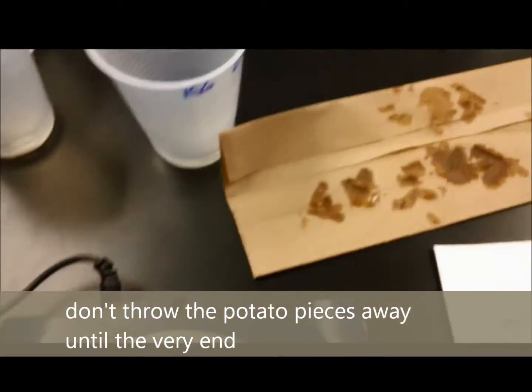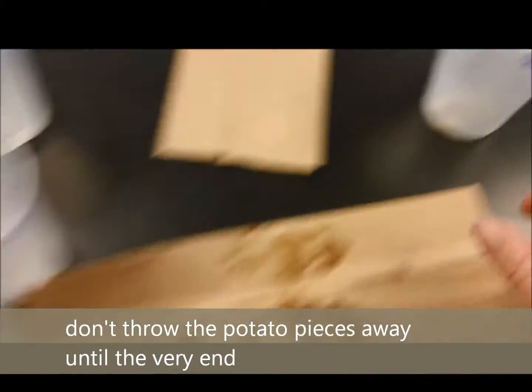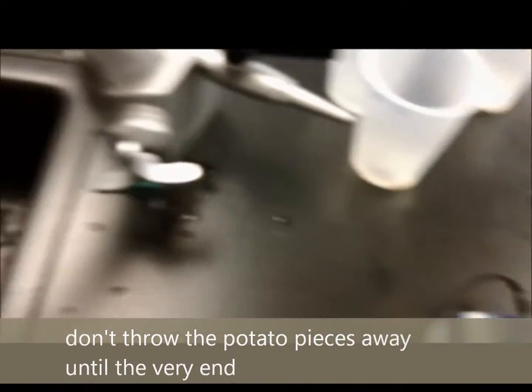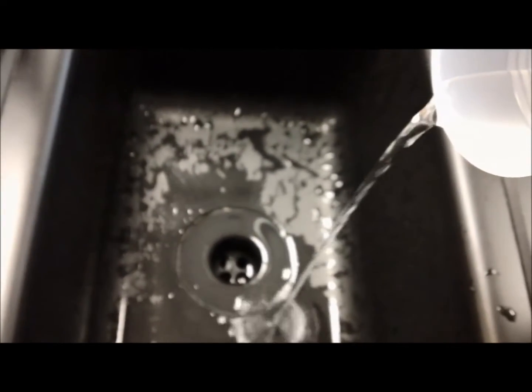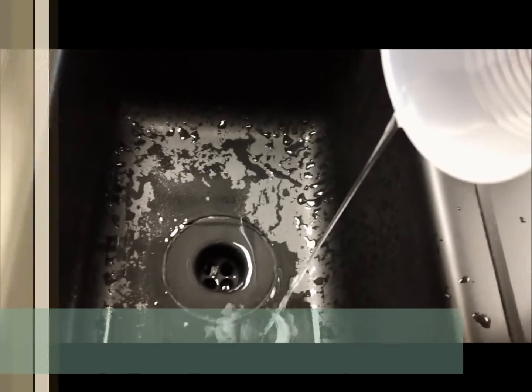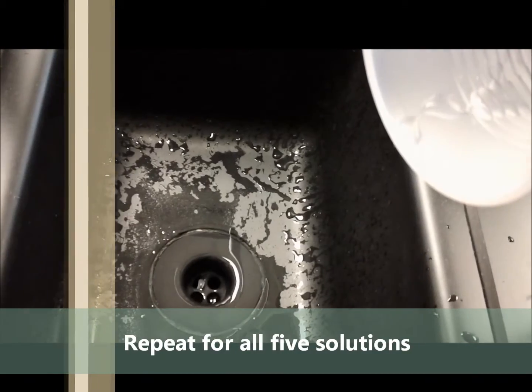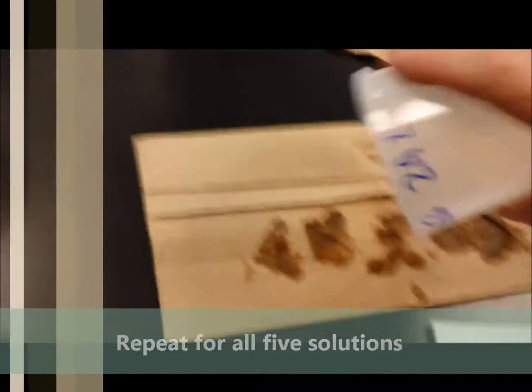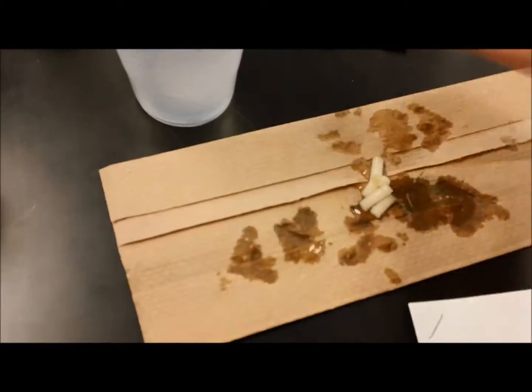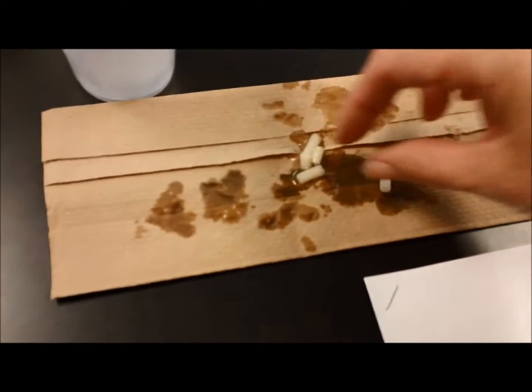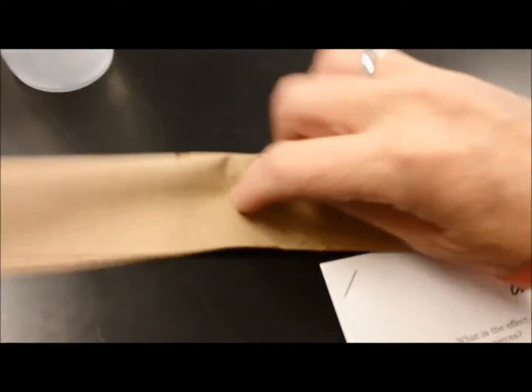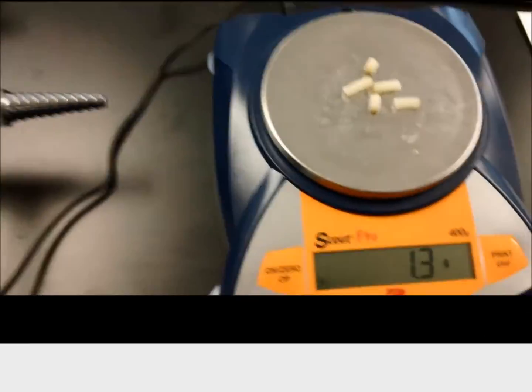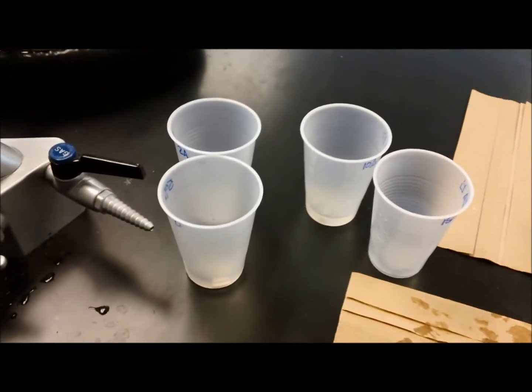We'll put these back into the cup just in case we need to weigh them again later, maybe if somebody in our group wasn't paying attention or didn't get the weights. Now we're going to do the 15%, and again we'll pat them dry because we don't want to weigh the water weight. We'll continue this with our other three.